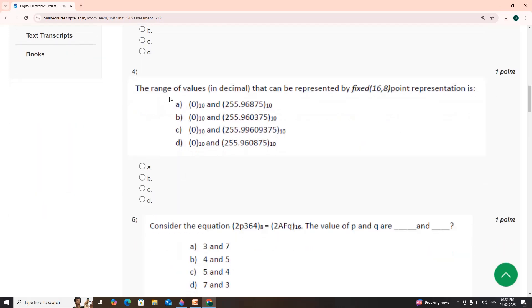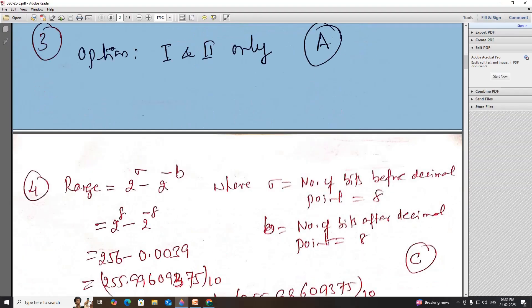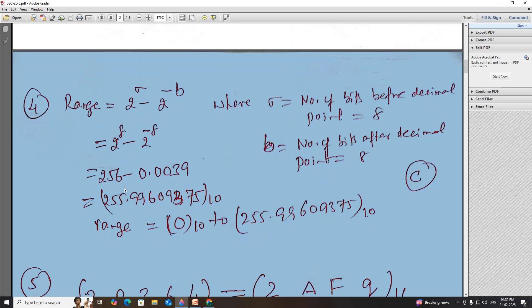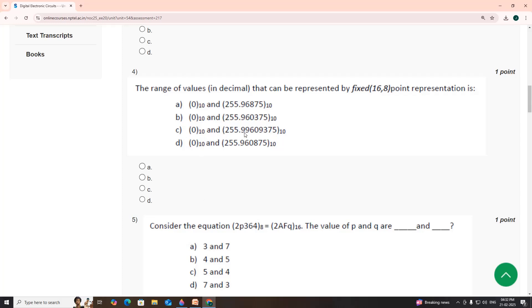Fourth one: the range of values that can be represented by fixed 16,8 point representation. To find the range, this is the formula we can use: 2 power A minus 2 power minus B. The number of bits before decimal point is 8, after decimal point is also 8. So 2 power 8 minus 2 power minus 8. This is 256 and this value is 0.0039. The range is 0 to 255.99. Option C.